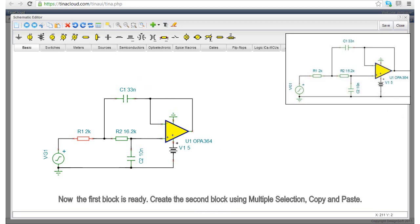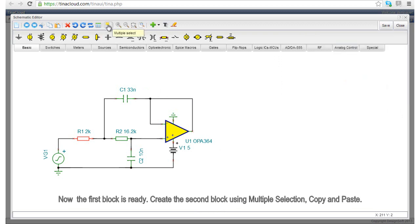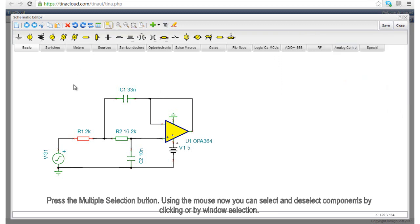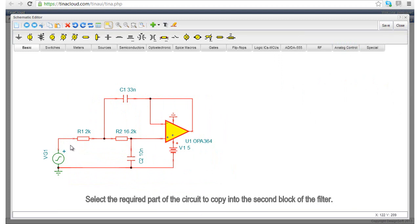Create the second block using multiple selection, copy and paste. Press the multiple selection button. Using the mouse, now you can select and deselect components by clicking or by window selection. Select the required part of the circuit to copy into the second block of the filter.